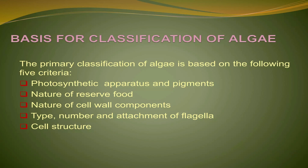All algae reproduce by vegetative, asexual, or sexual methods. The sex organs are naked and sexual reproduction may be isogamous, anisogamous, or oogamous. Most of the species are haploid and others are diploid. These are the important features of algae.